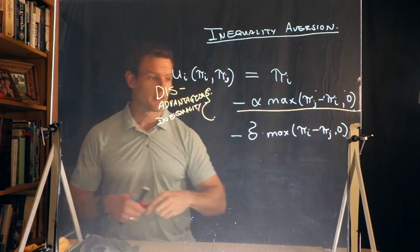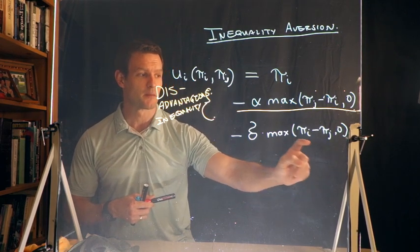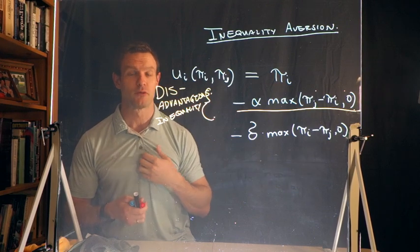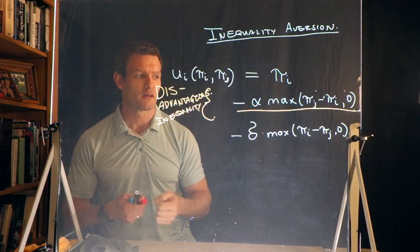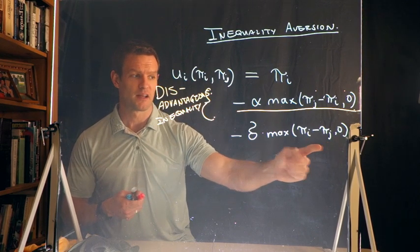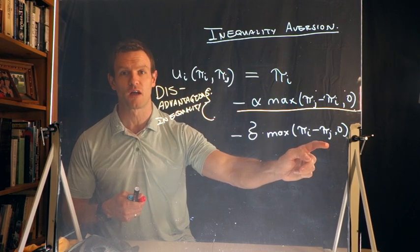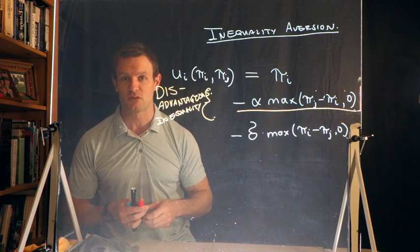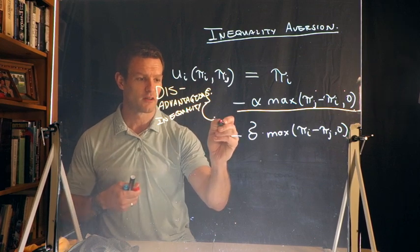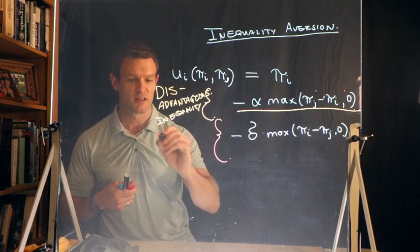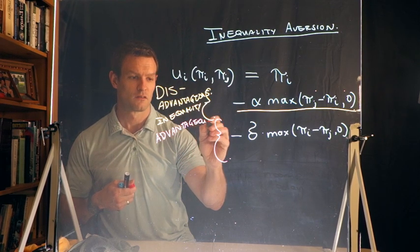Now the third term that we have, δ max(π_i - π_j), what is that telling us? π_i minus π_j, my payoff minus your payoff. If I have more than you do here, let's say for example I got $12 and you got $8, that means that difference is $4. Then I experience some decrease in my utility as a consequence of having more than you do. So in that context, this third term is advantageous inequality.